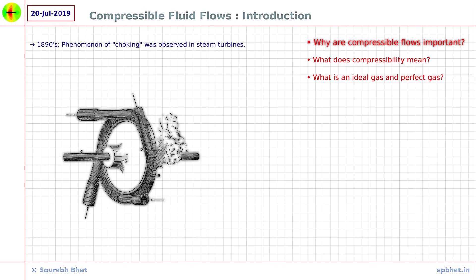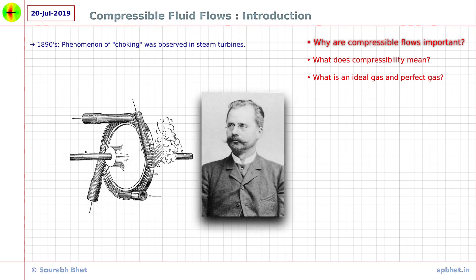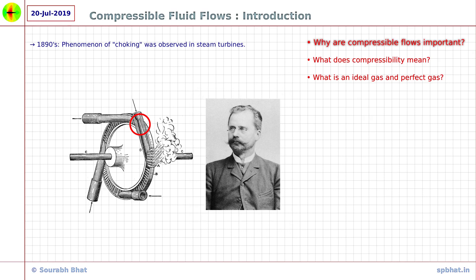The engineers at the time were struggling to increase the flow rate to increase the speed of the turbine. It was not until de Laval used the divergent part of the nozzle to achieve supersonic flows, which would be very counter-intuitive if you do not consider the compressibility effects, and he was able to achieve turbine speeds of up to 40,000 rpm.